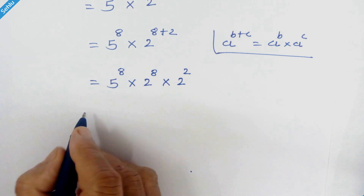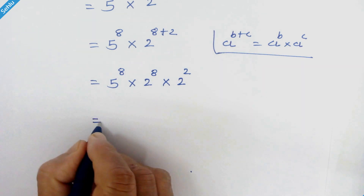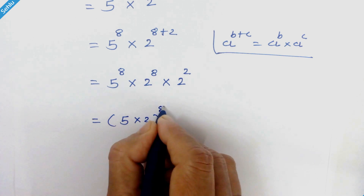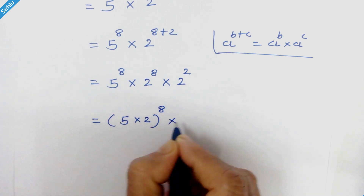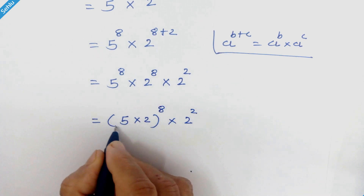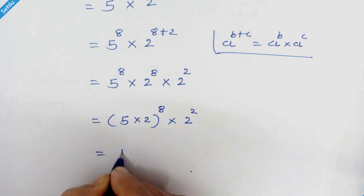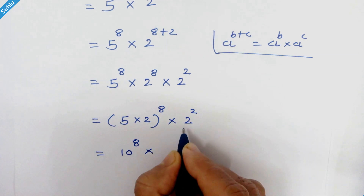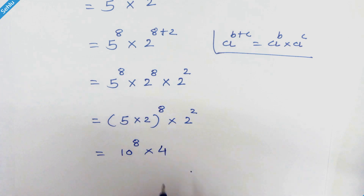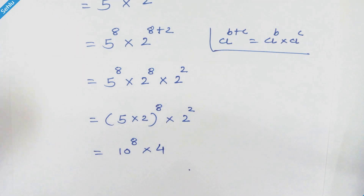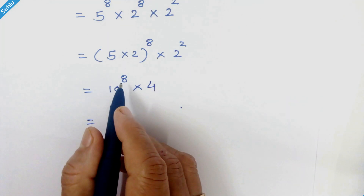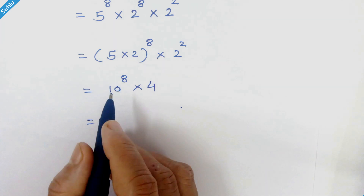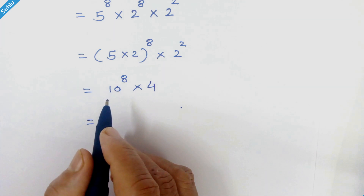So we can write it as 5 times 2, whole raised to 8, times 2 square. 5 times 2 is 10. So we have 10 raised to 8 times 2 square, which is 4. Now 10 raised to 8 is 8 zeros after 1, that means it is 100 million.